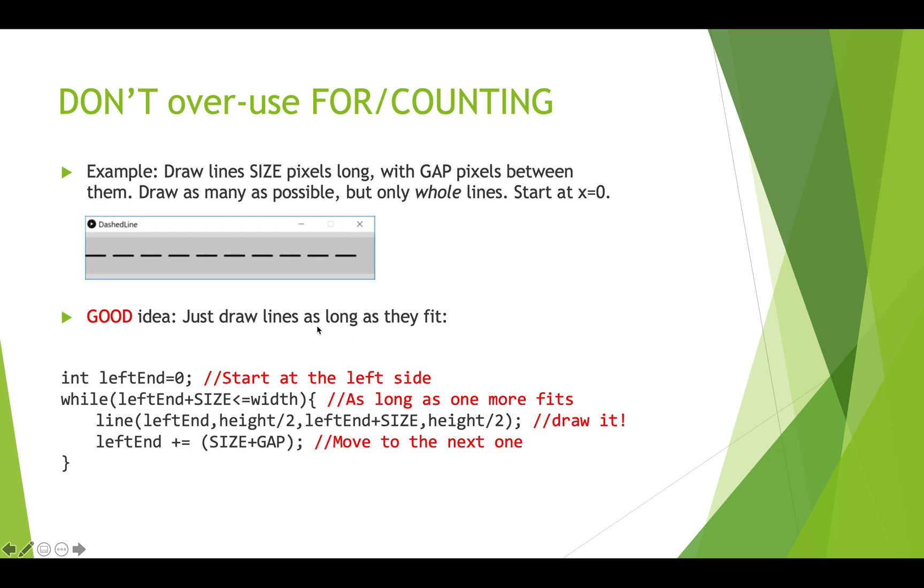What's a better idea is to just keep on drawing lines as long as they fit. So in this case, we're going to say left end equals zero. And while left end plus the size is less than the width. So this means we're taking where we currently are adding the size of the line. And as long as we can do that, and we're not going over the width of the canvas, then let's do it.